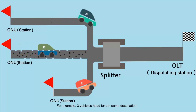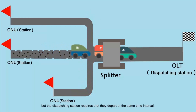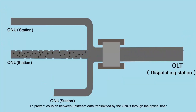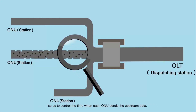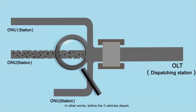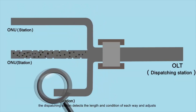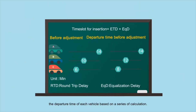For example, consider three vehicles heading for the same destination. Their distances from the destination are different, but the dispatching station requires that they depart at the same time interval to prevent collision between upstream data transmitted by ONUs through the optical fiber. The OLT must precisely measure the distance between each ONU and OLT, so as to control the time when each ONU sends the upstream data. Before the three vehicles depart, the dispatching station detects the length and condition of each way and adjusts the departure time of each vehicle based on a series of calculations.